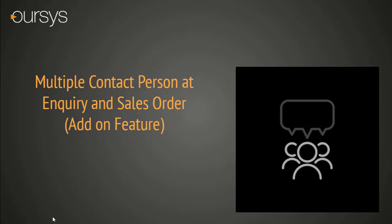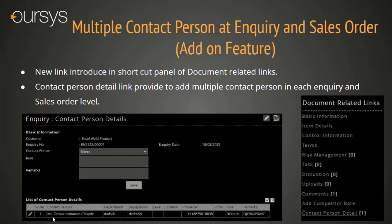Multiple Contact Person at Inquiry and Sales Order level. This is an add-on feature. Under the shortcut link of the document-related tab, you can see the Contact Person Detail link. Once you click on that, you will see a separate functionality for adding multiple contacts in a single transaction. System will help the user to do follow-ups if multiple persons are involved, and we can also add optional contact person details for future reference.